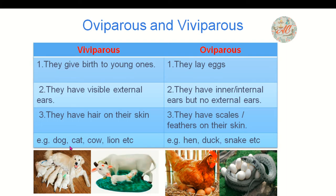Examples of viviparous animals: dog, cat, cow, lion. As you can see in this picture, dogs give birth to young ones, cats give birth to young ones, cows give birth to young ones. Examples of oviparous animals: hen, duck, snake. As you can see, they lay eggs. These are the differences between viviparous and oviparous animals.